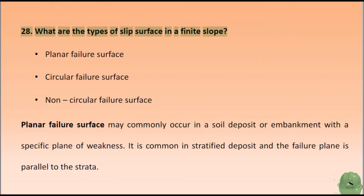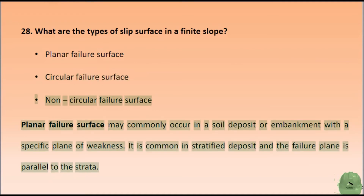What are the types of slip surface in a finite slope? Planar failure surface, circular failure surface, and non-circular failure surface. Planar failure surface may commonly occur in a soil deposit or embankment with a specific plane of weakness. It is common in stratified deposits and the failure plane is parallel to the strata.